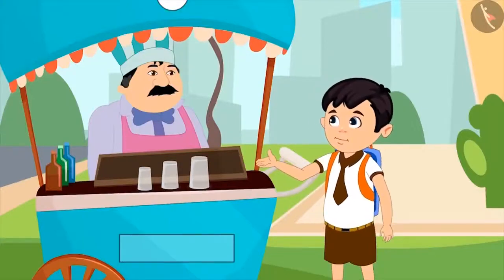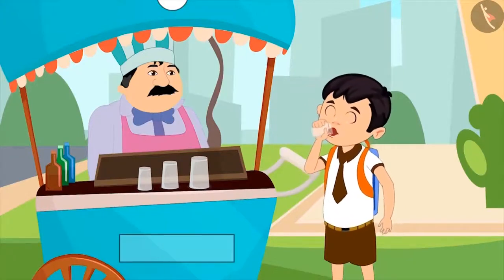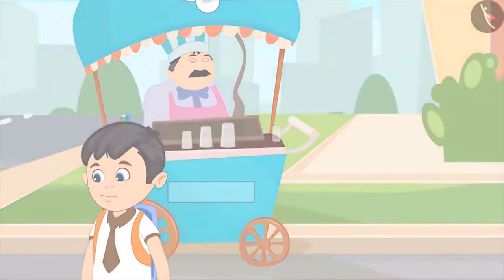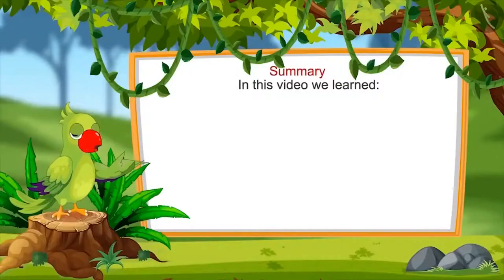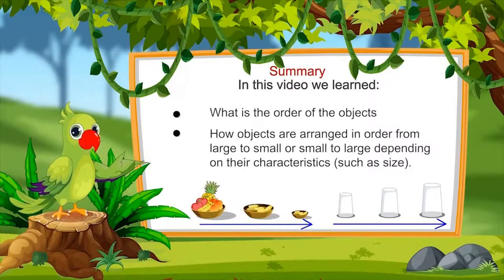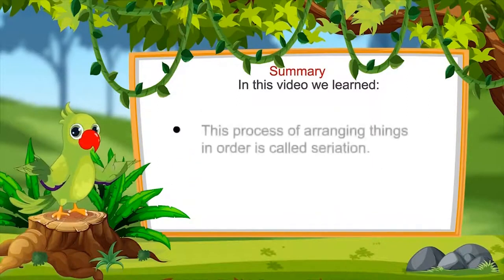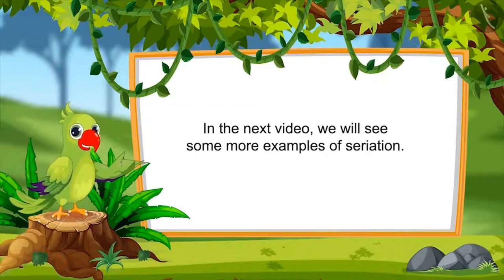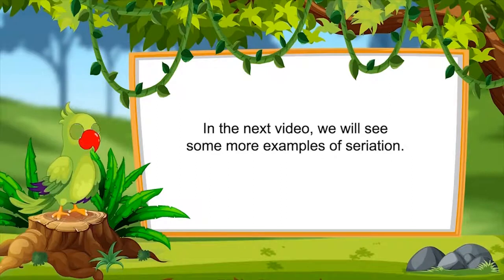Chotu gets thirsty and asks the lemonade vendor for a small glass of lemonade. Then he quickly drinks the lemonade and leaves for school. So children, that is all for today. In this video we have learnt what is the order of objects — how objects are arranged in order from largest to smallest or smallest to largest depending on their characteristics. This process of arranging objects in an order is called seriation. In the next video we will see some more examples of seriation. Till then, practice arranging objects around you in different types of order based on their characteristics. Bye friends!